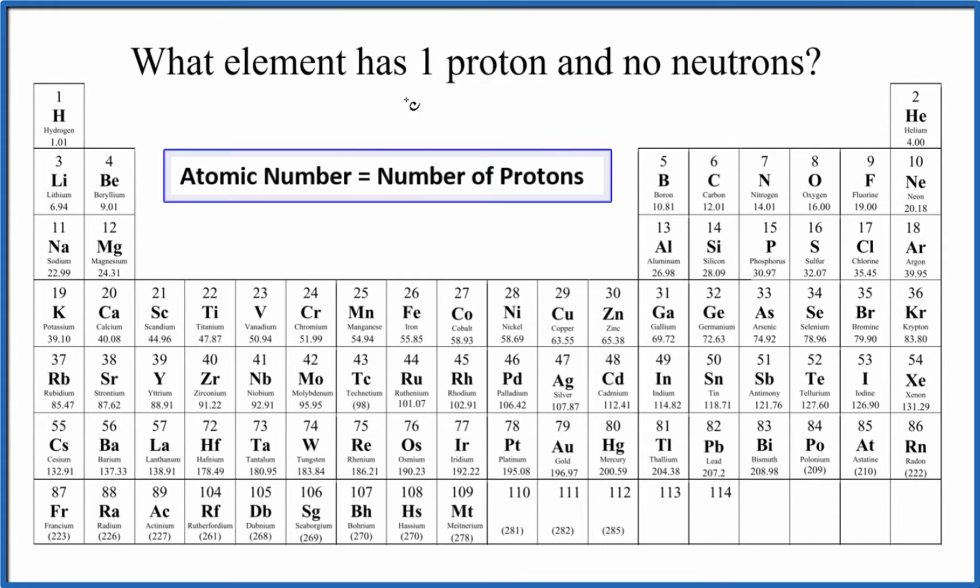So what element has one proton and no neutrons? Just one proton there in the nucleus. We can answer this question by looking at the periodic table and recognizing that the number of protons equals the atomic number.